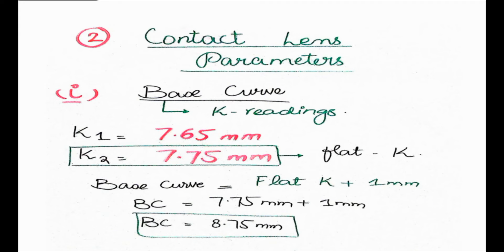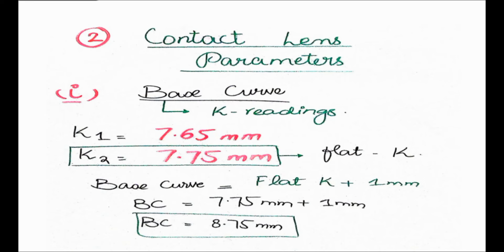The first parameter is base curve, which we calculate using the K readings from keratometry. K1 was 7.65 mm and K2 was 7.75 mm. Keratometry measures the radius of curvature on two meridians - one will be the flatter meridian and one the steeper meridian. I have told you that the greater the value, the flatter the meridian it is. So the larger number 7.75 mm corresponds to the flatter meridian, and the smaller number 7.65 mm corresponds to the steeper meridian.